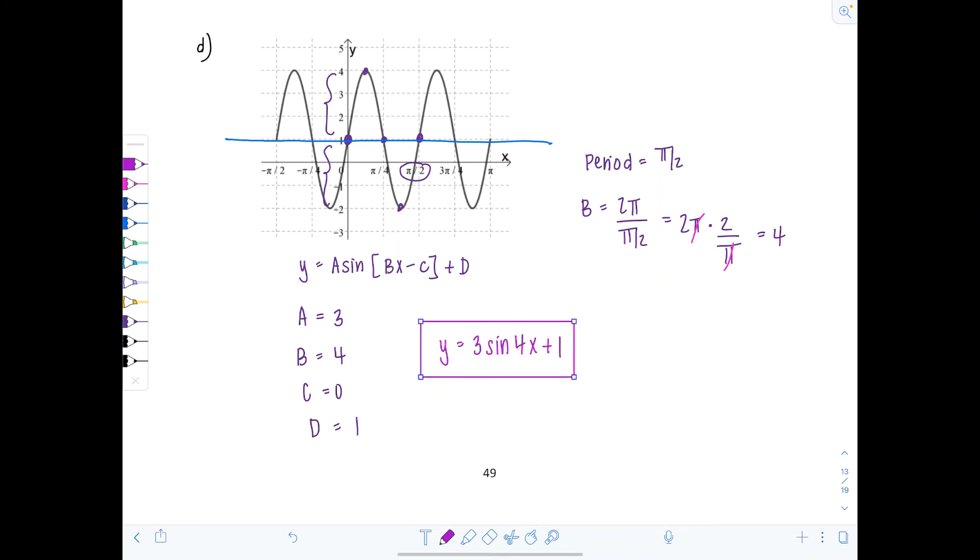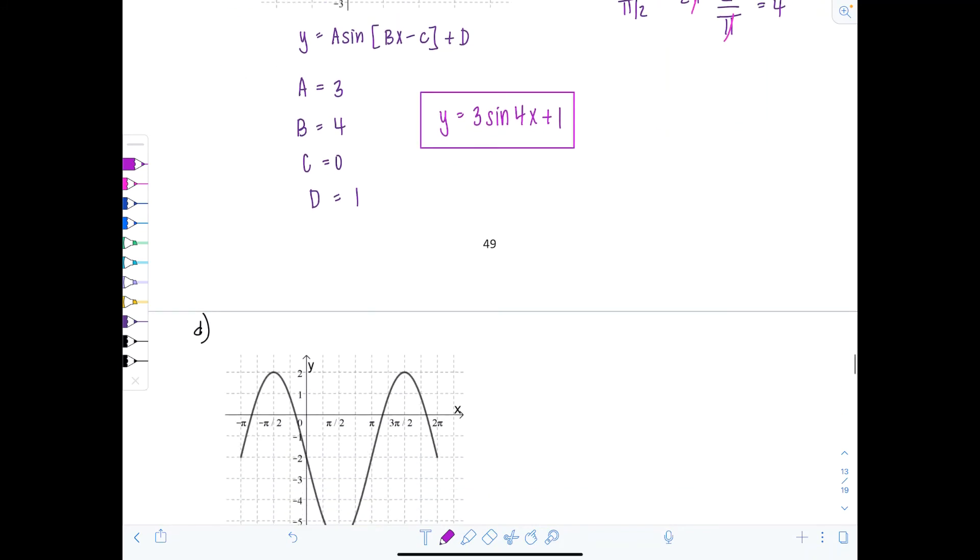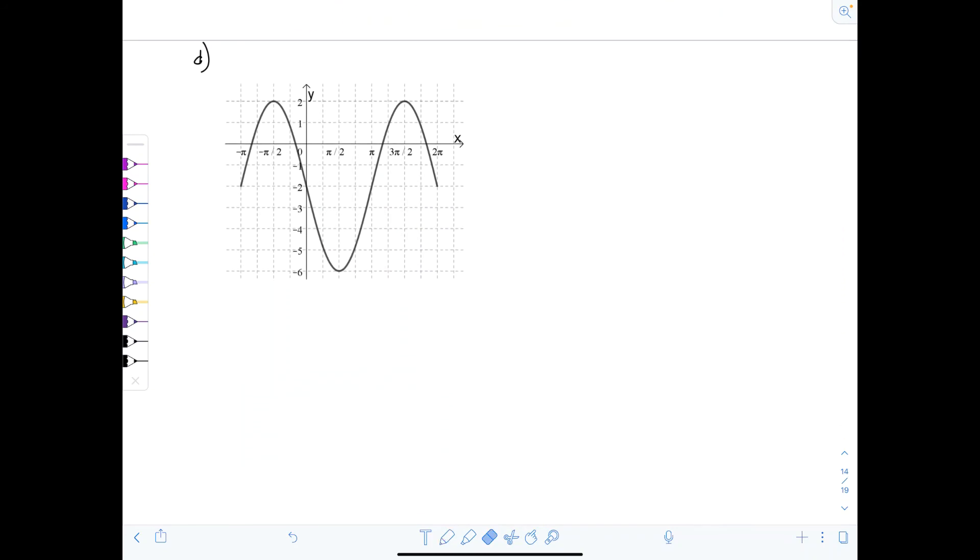So let's just put it all together. We have y equals 3 times sine of 4x plus 1. Very good. And one more bonus example. This is E, right? I got two bonuses for you today.